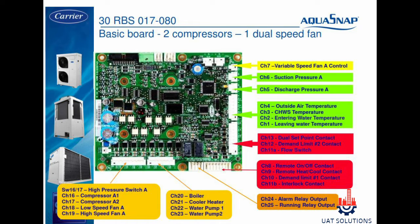High pressure switch is connected on point SW 16-17. Compressor A1 is connected on channel 16, and compressor A2 is connected on channel 17. Low speed fan circuit A is connected on channel 18, and high speed fan circuit A is connected on channel 19.